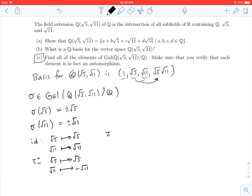Then, we'll have one I'll call tau minus plus, that'll send root 5 to negative root 5, and root 11 to positive root 11.